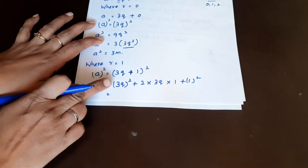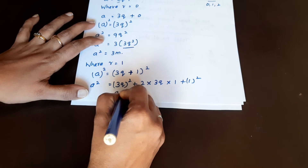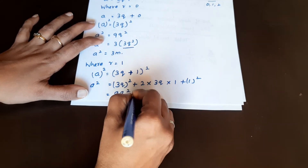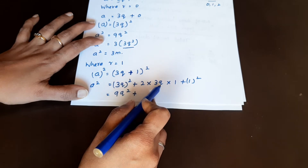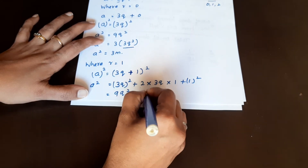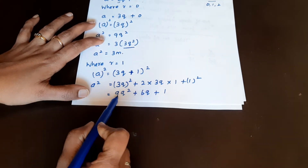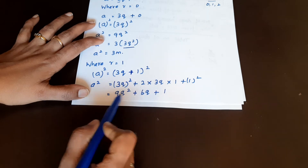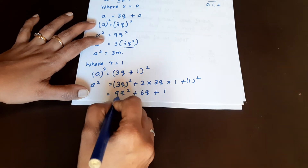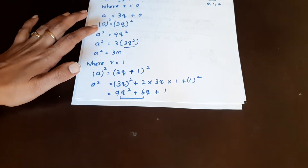Applying the identity: (3q)² + 2(3q)(1) + 1² = 9q² + 6q + 1. Now for 9q² and 6q, we take out 3 as the common factor from those two terms.